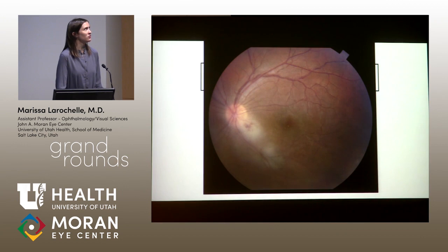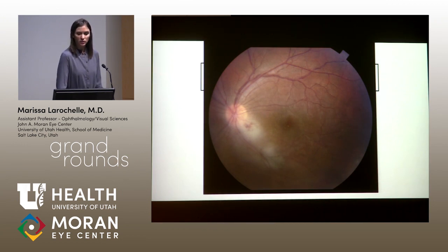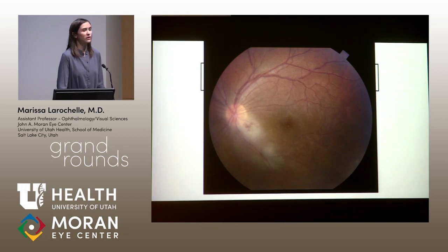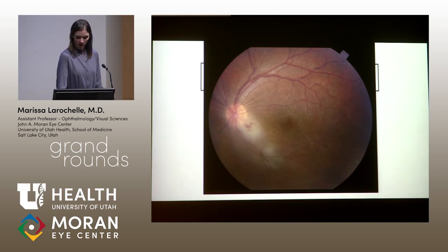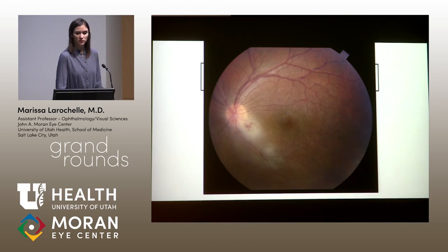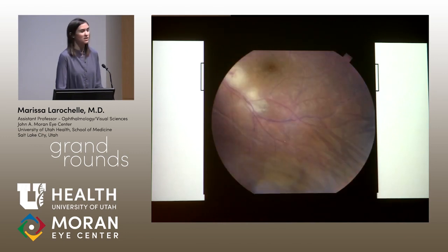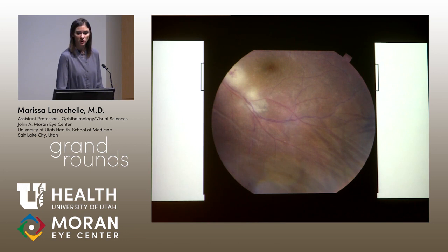We can see the photo of the left eye — a slightly hazy view overlying the lesion, which shows retinal whitening along the inferior arcade associated with hemorrhage. At the lower part of the arcade, there's an area that looks a little more pigmented or atrophic — a pigmented scar.